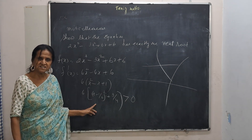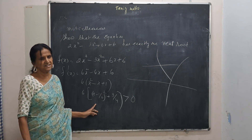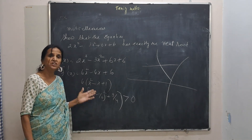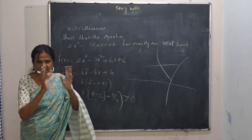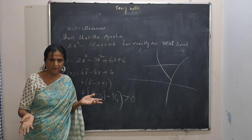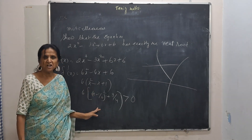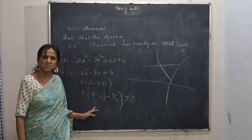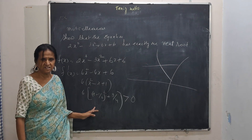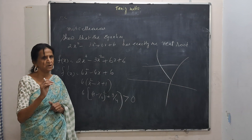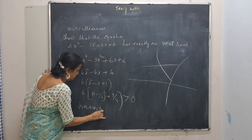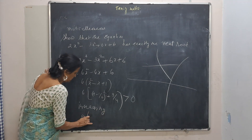F'(x) is always greater than 0. When F'(x) is greater than 0, it is an increasing function; when F'(x) is less than 0, it is a decreasing function. Since F'(x) is always positive, the function is always increasing — strictly increasing. If F'(x) is positive always, it's strictly increasing, so there will be only one real root.